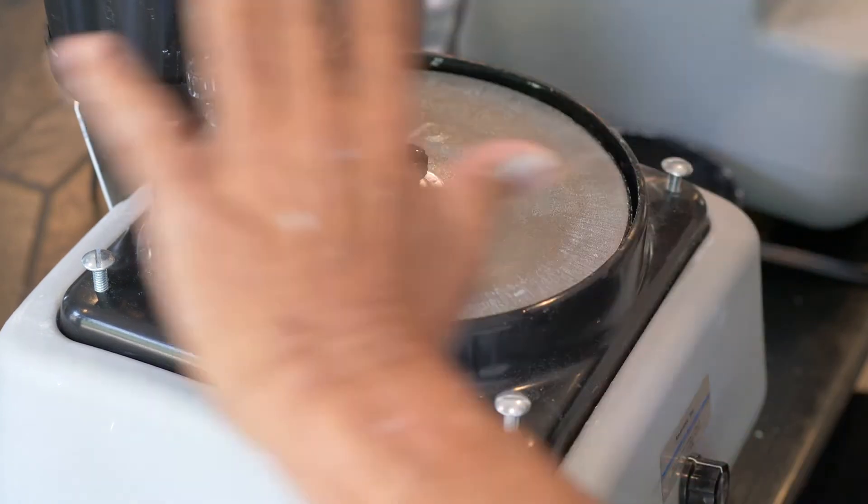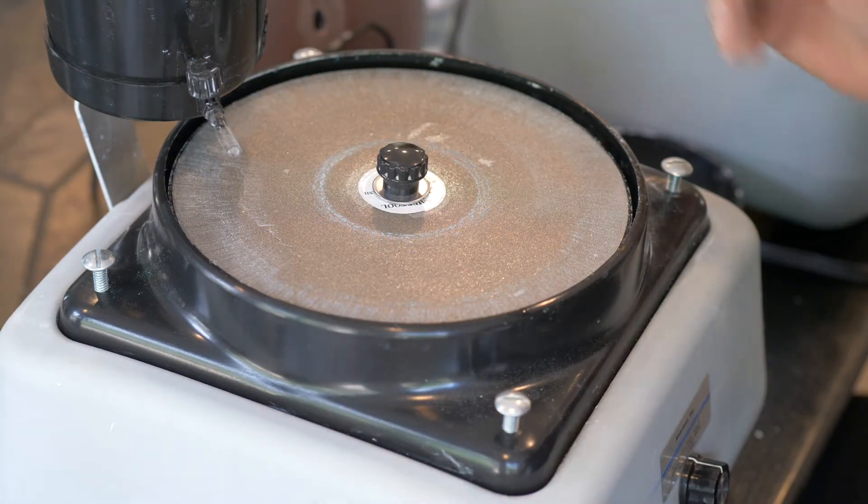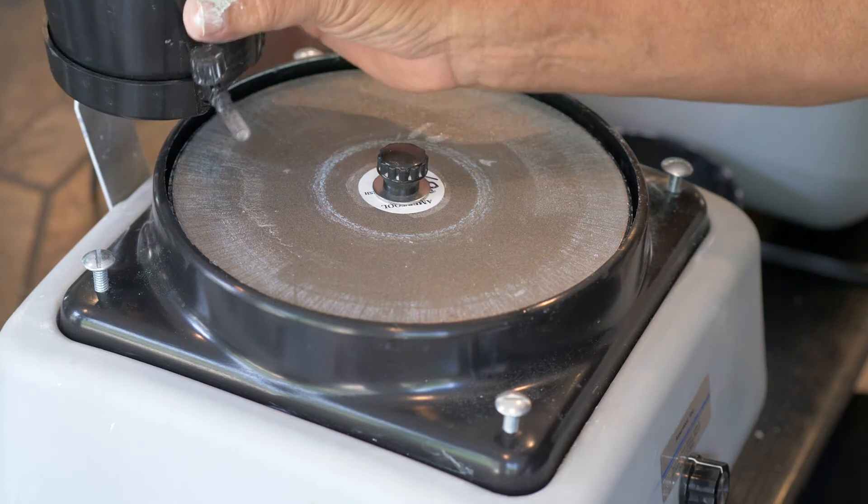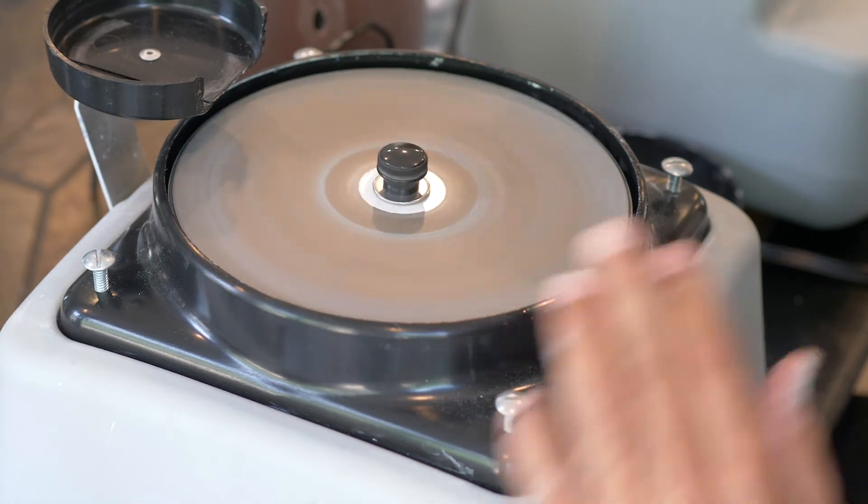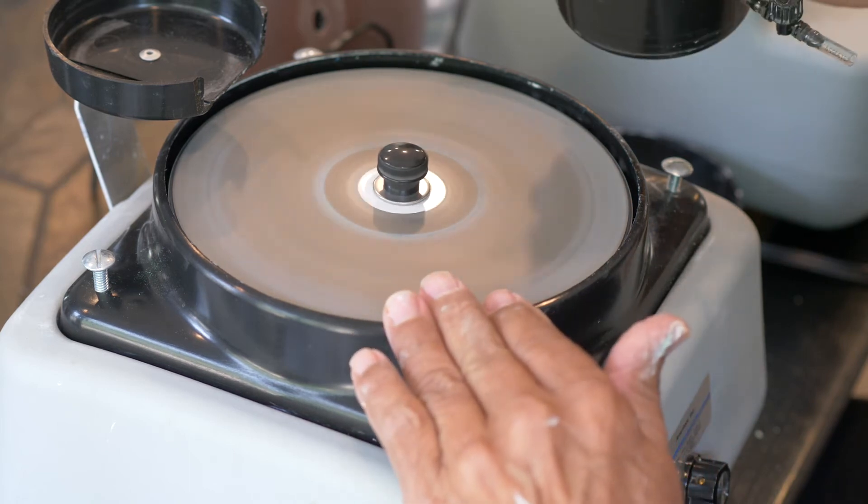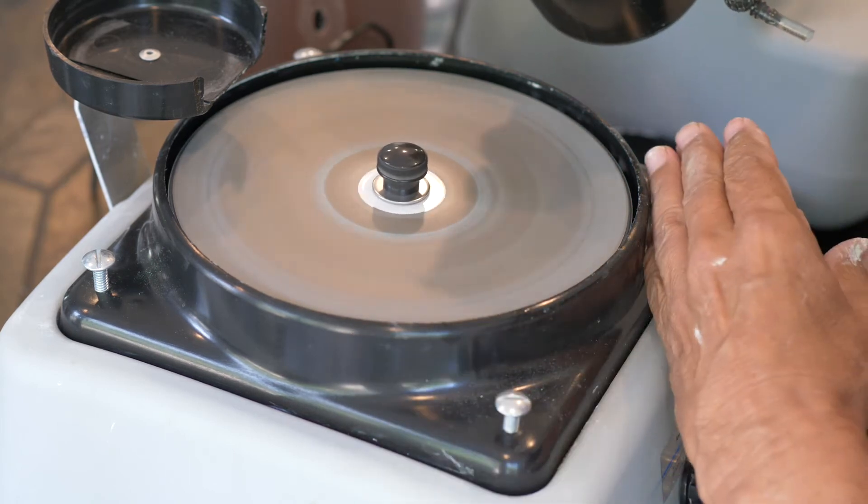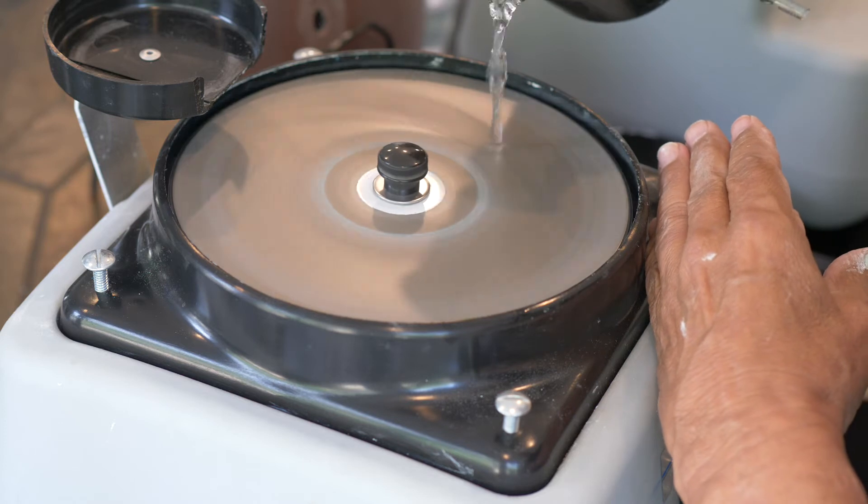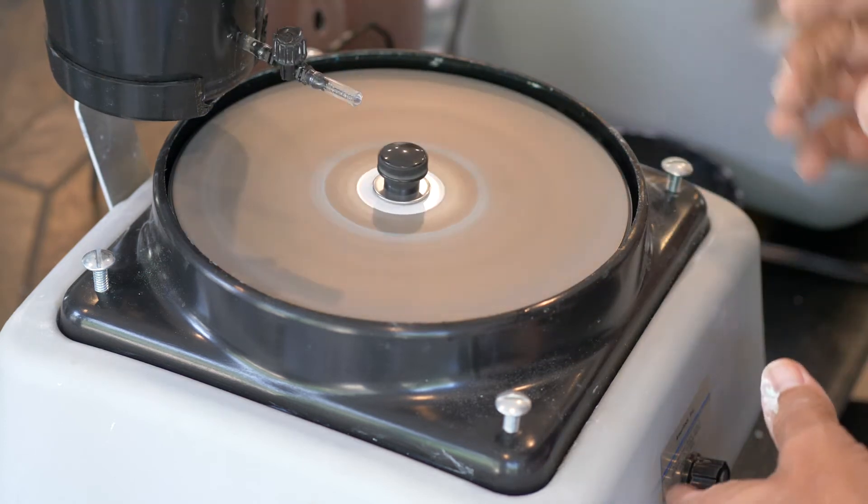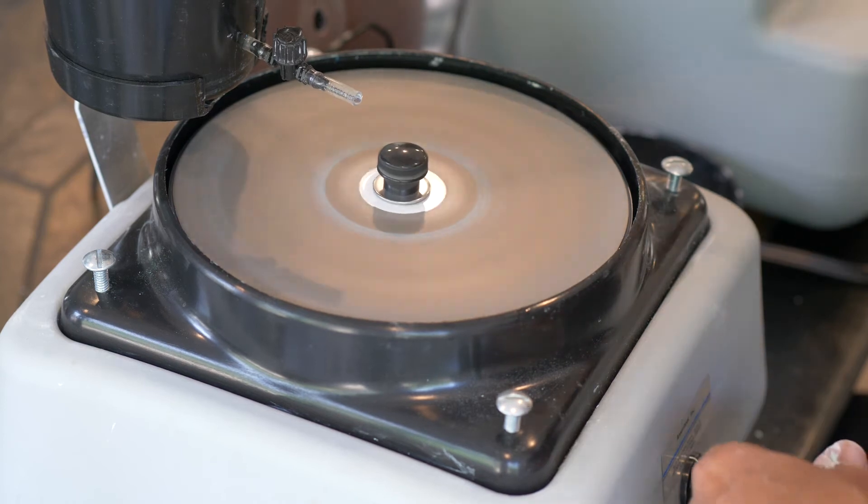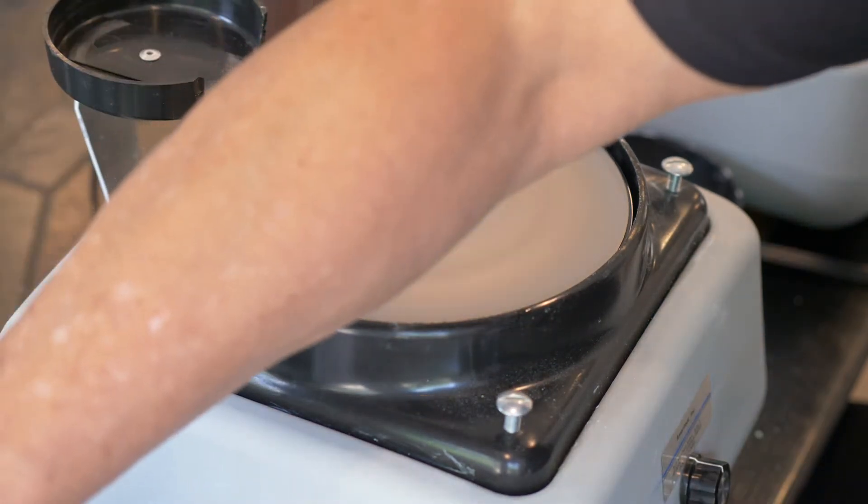What that means is you're not going to get water all over the table. I'm working on a kitchen table right now, so it makes it a whole lot easier for cleanup. You can see the way that the spray shields are designed—they're designed so you don't get a lot of overspray. So what that means is you have a much cleaner work area.